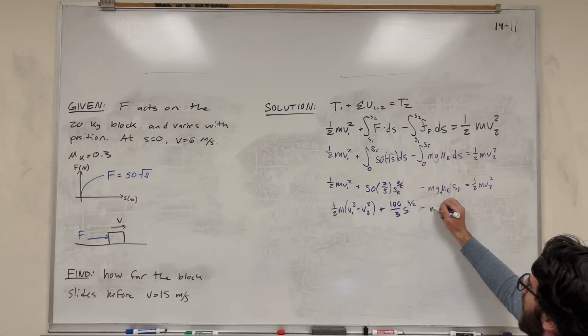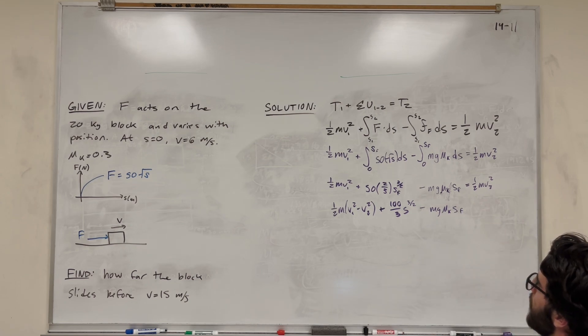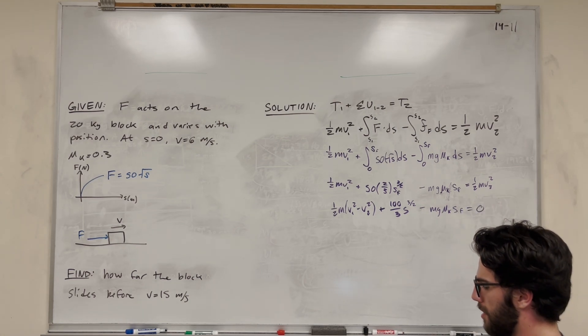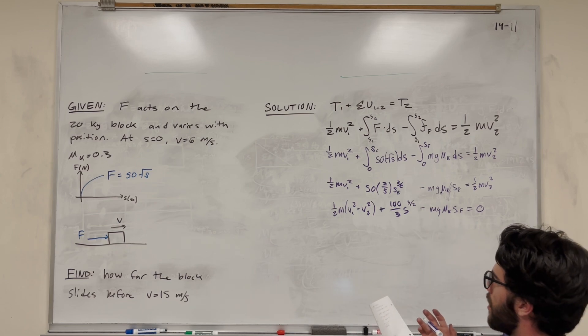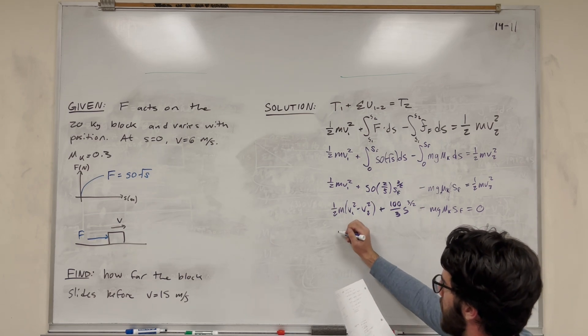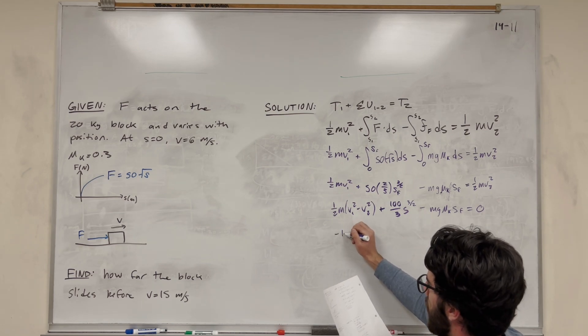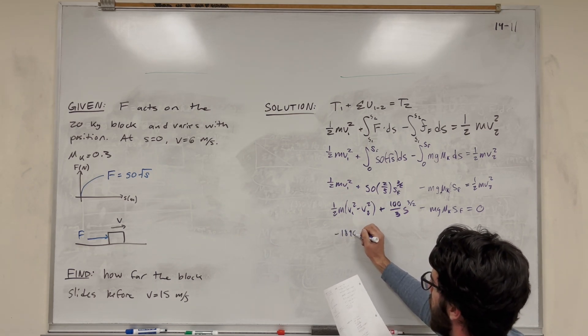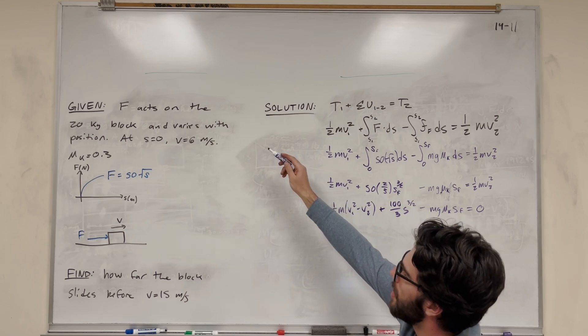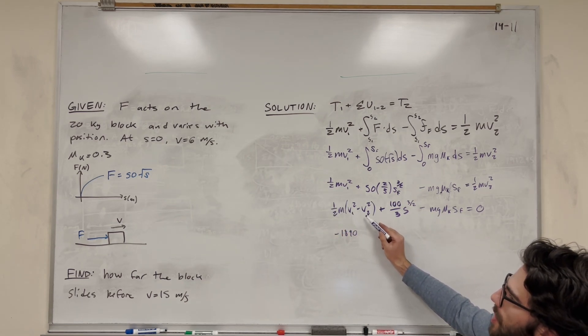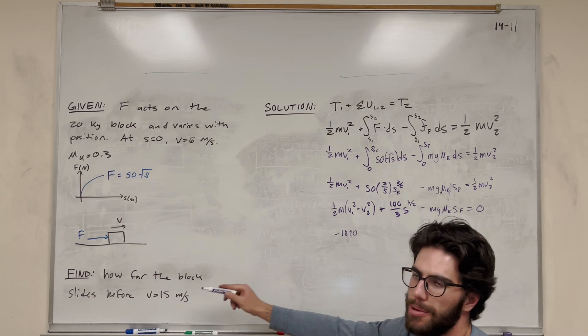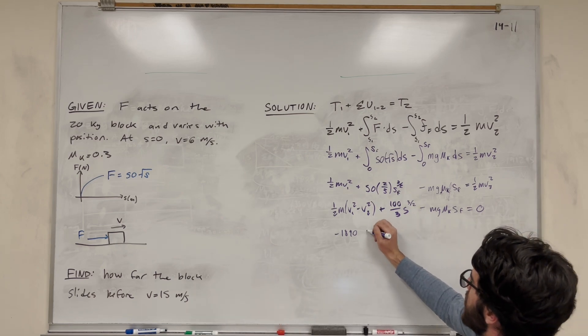This is going to be s to the three-halves, and then this is going to be minus mass, gravity, coefficient of kinetic friction, s final. And this is all equal to zero. Finally, let's just plug in our numbers. This is going to become negative 1,890. We're plugging in mass is 20 kilograms, velocity initial is 6, and velocity final is 15.